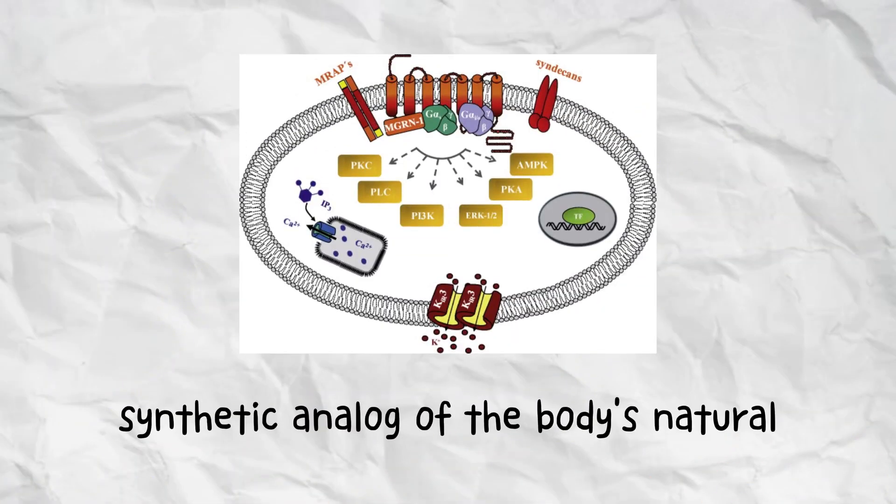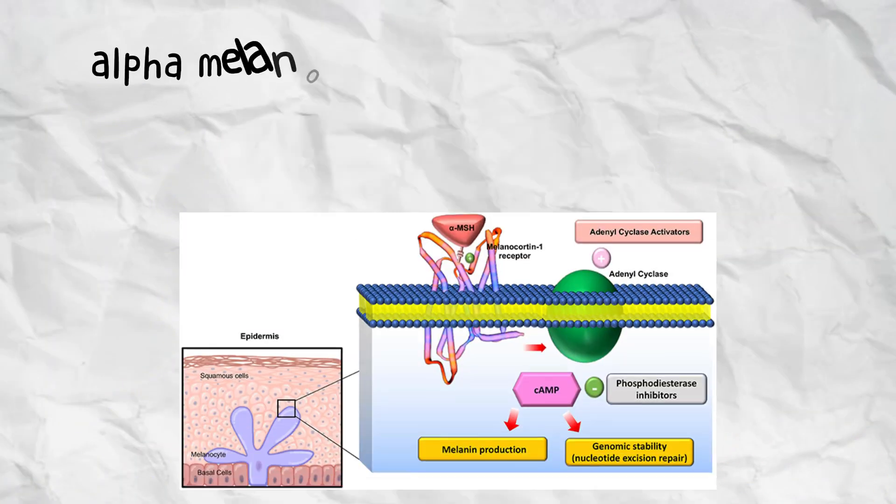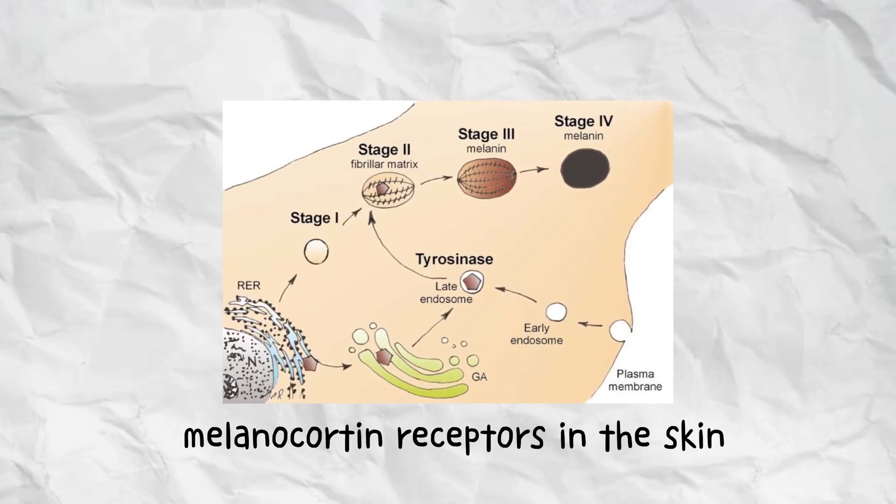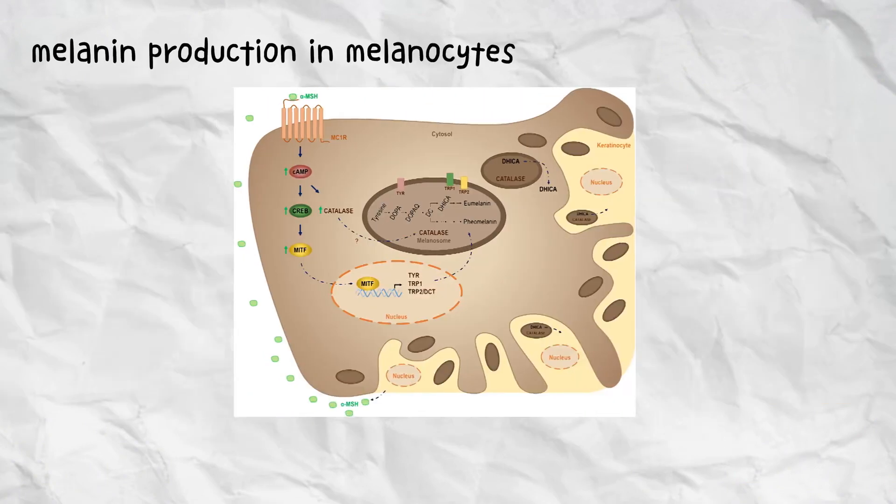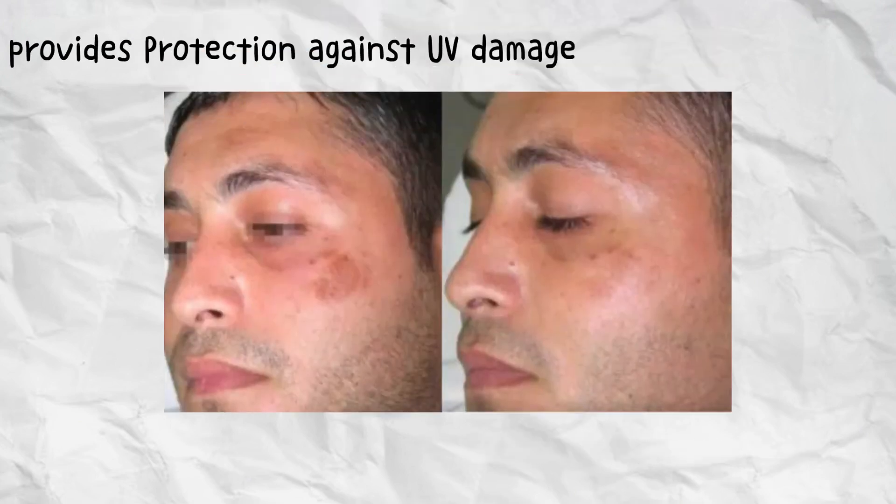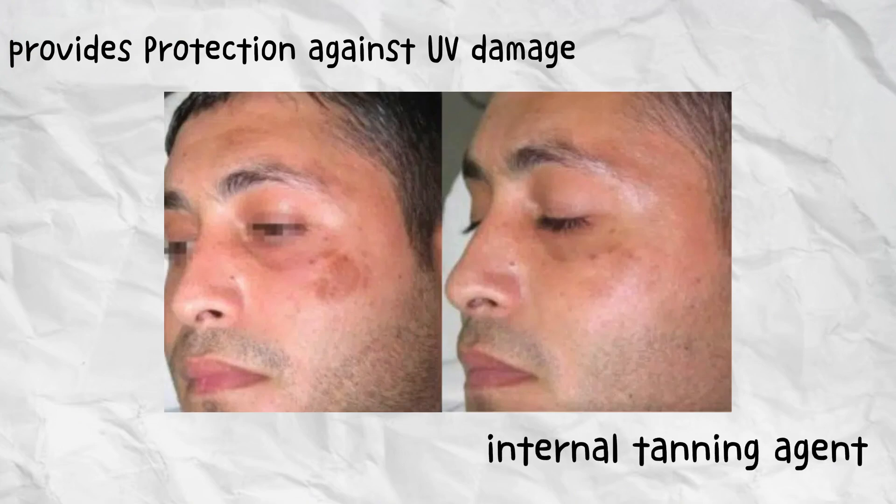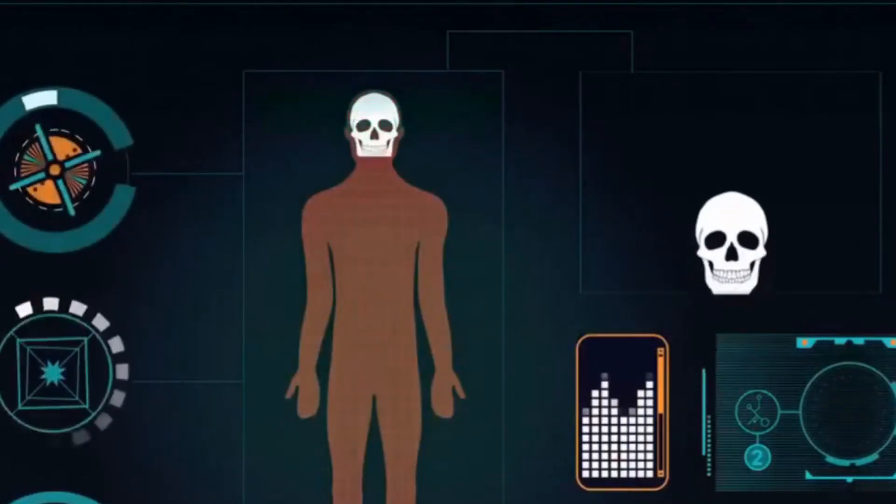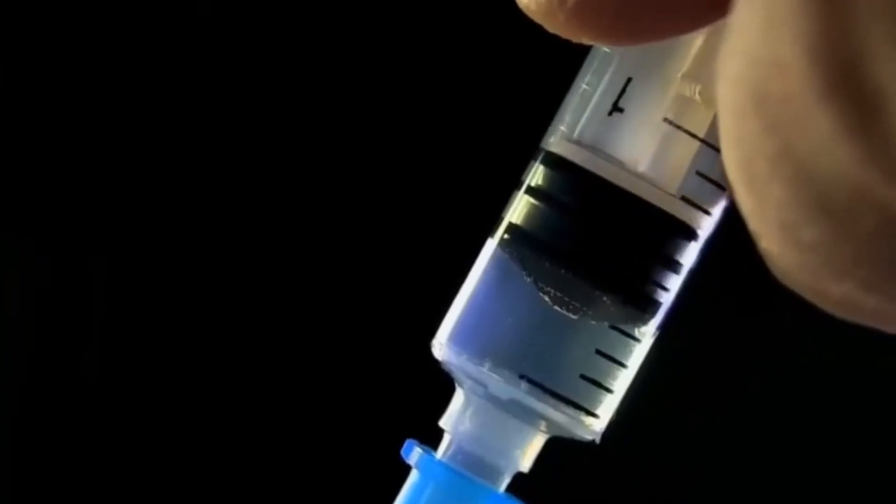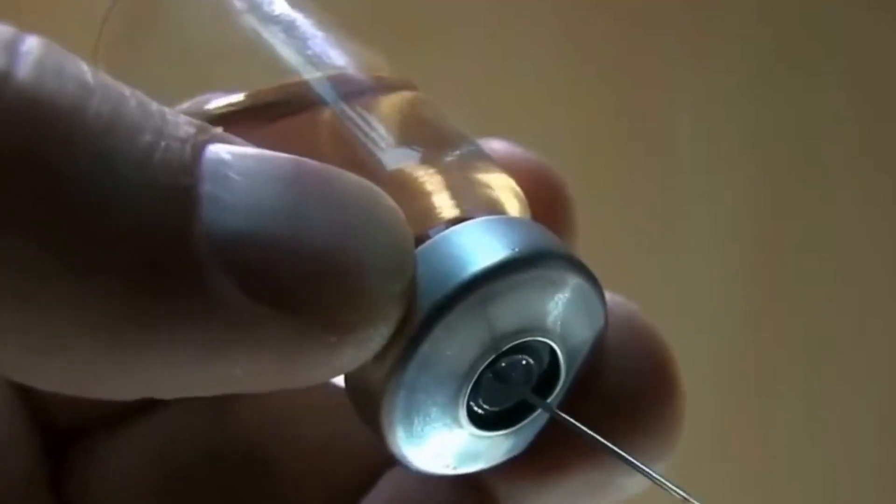Melanotan-2 is a synthetic analog of the body's natural alpha-melanocyte stimulating hormone, AMSH, which activates melanocortin receptors in the skin. By stimulating melanin production in melanocytes, it darkens the skin tone and provides protection against UV damage, functioning like an internal tanning agent. Beyond pigmentation, melanotan-2 also influences other melanocortin receptors linked to sexual function, appetite, and energy balance.